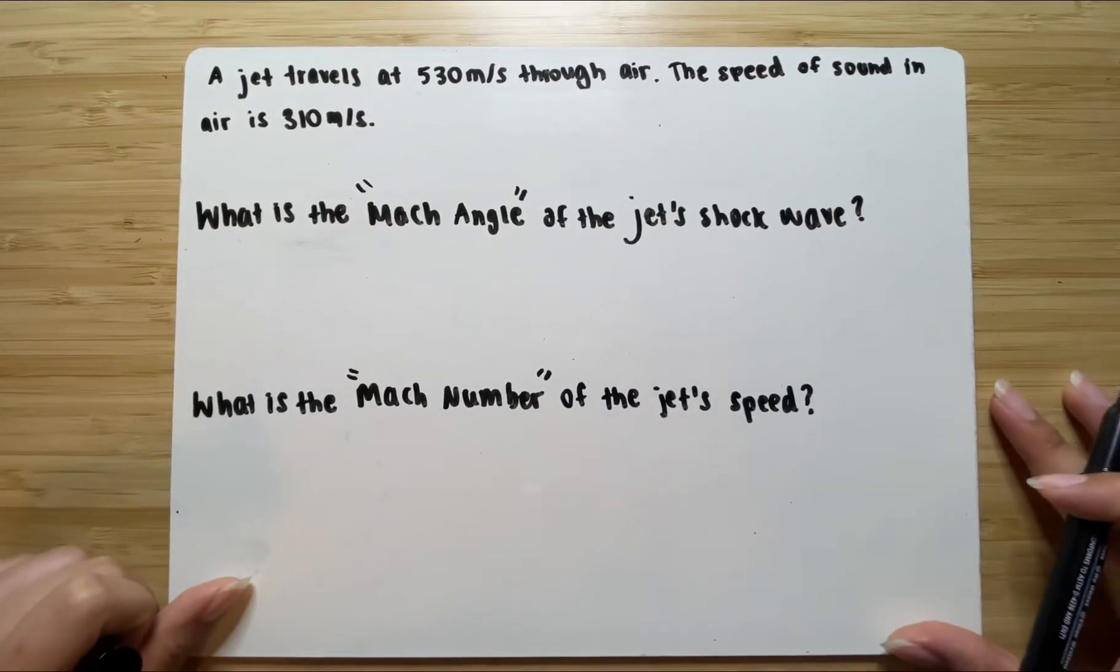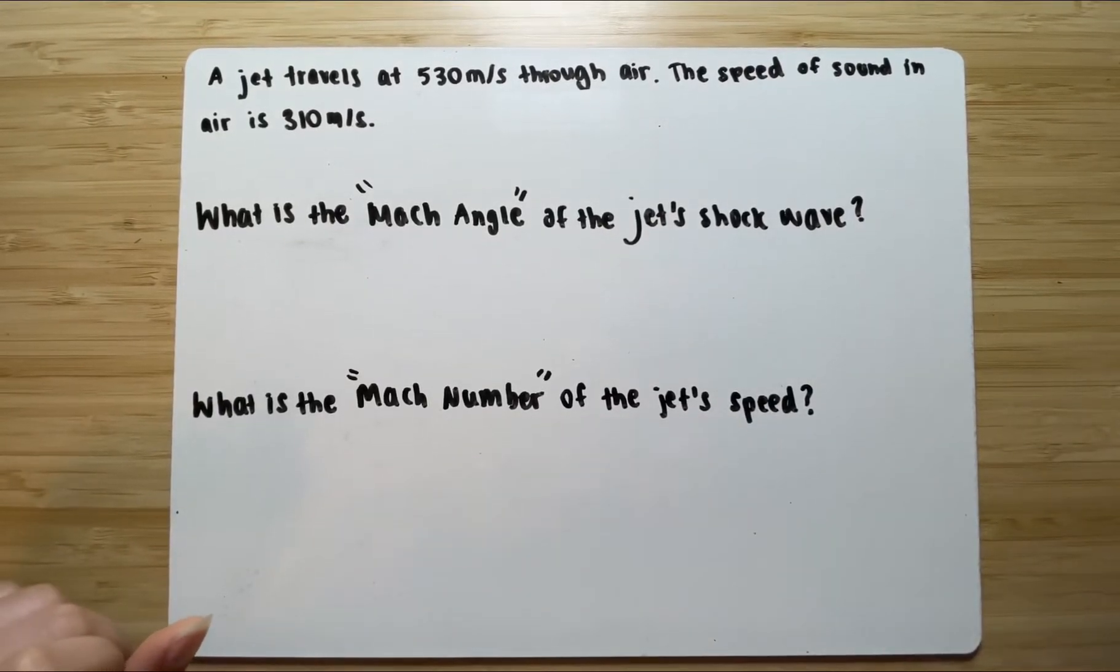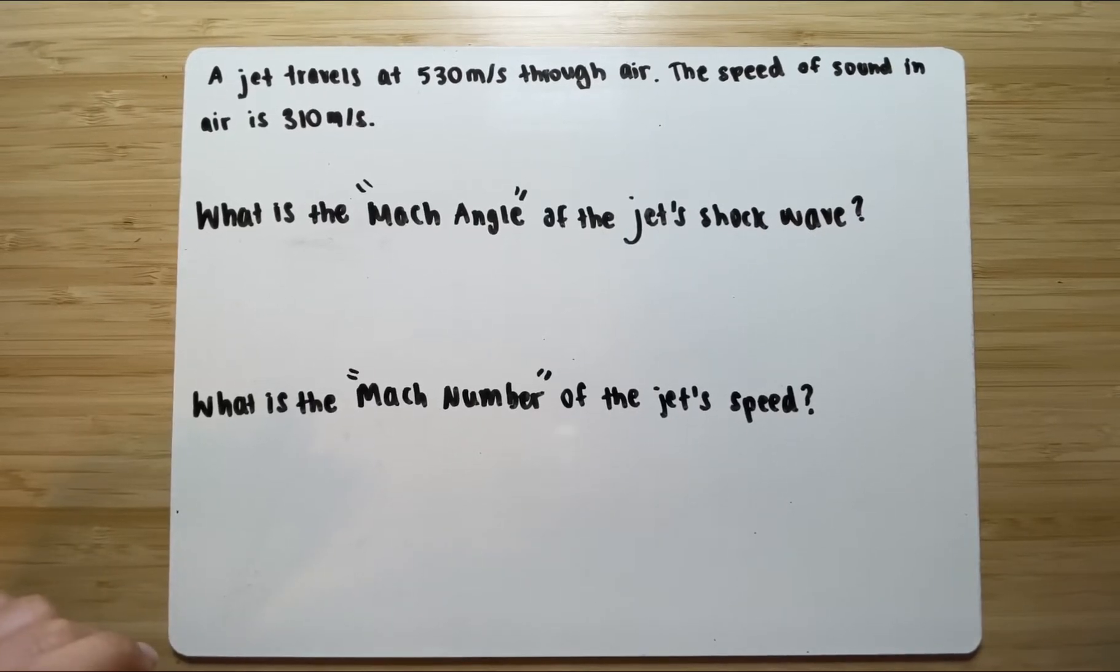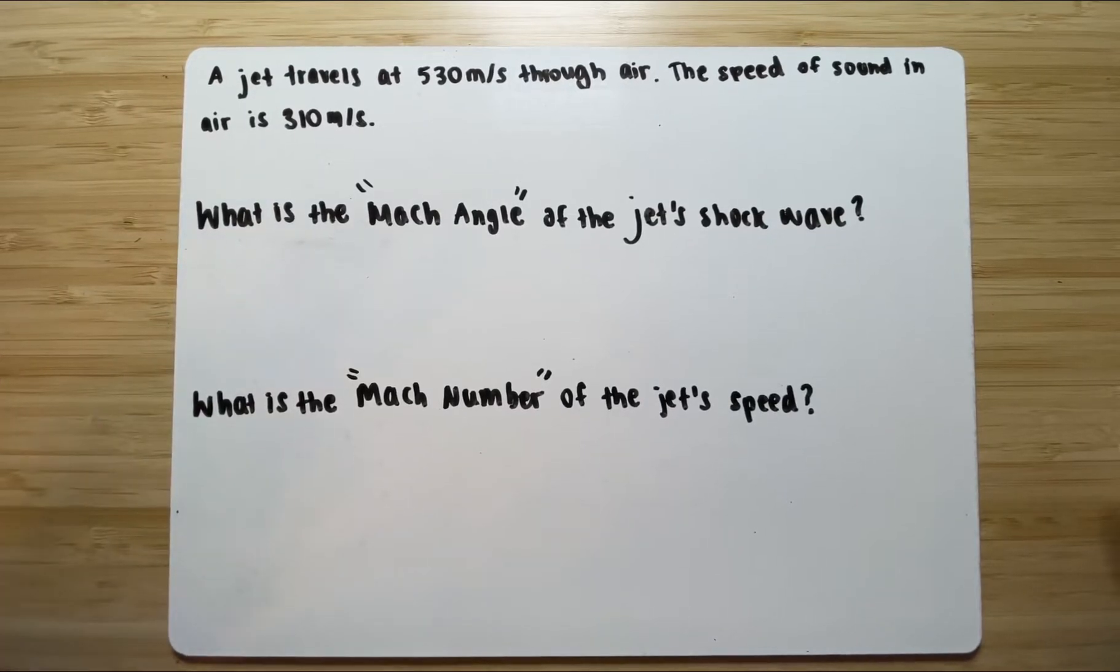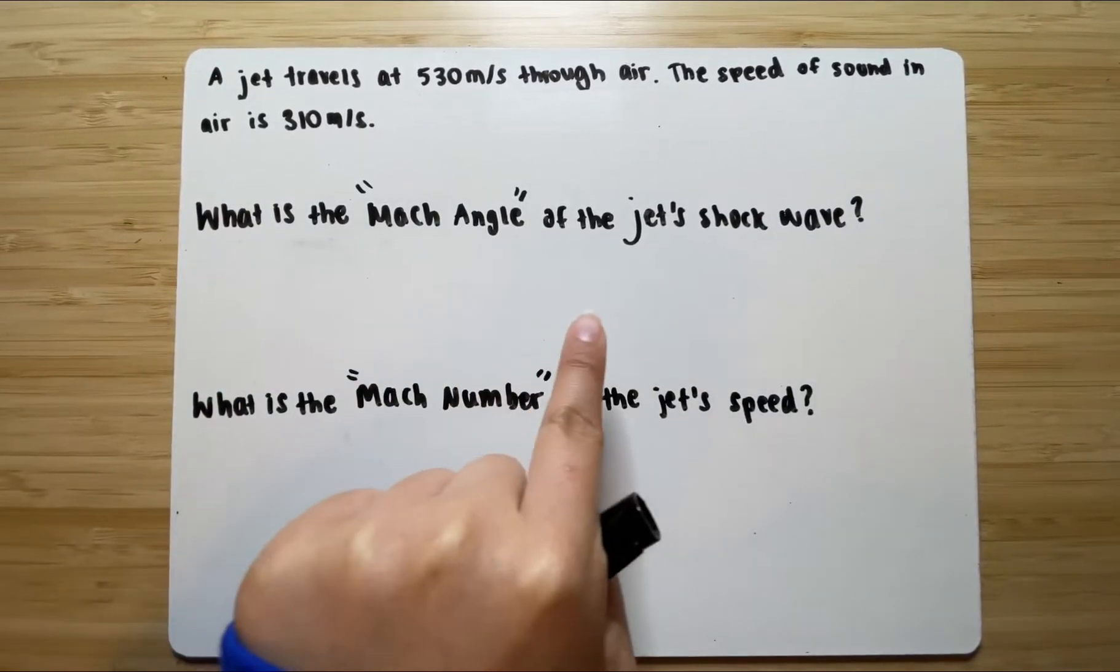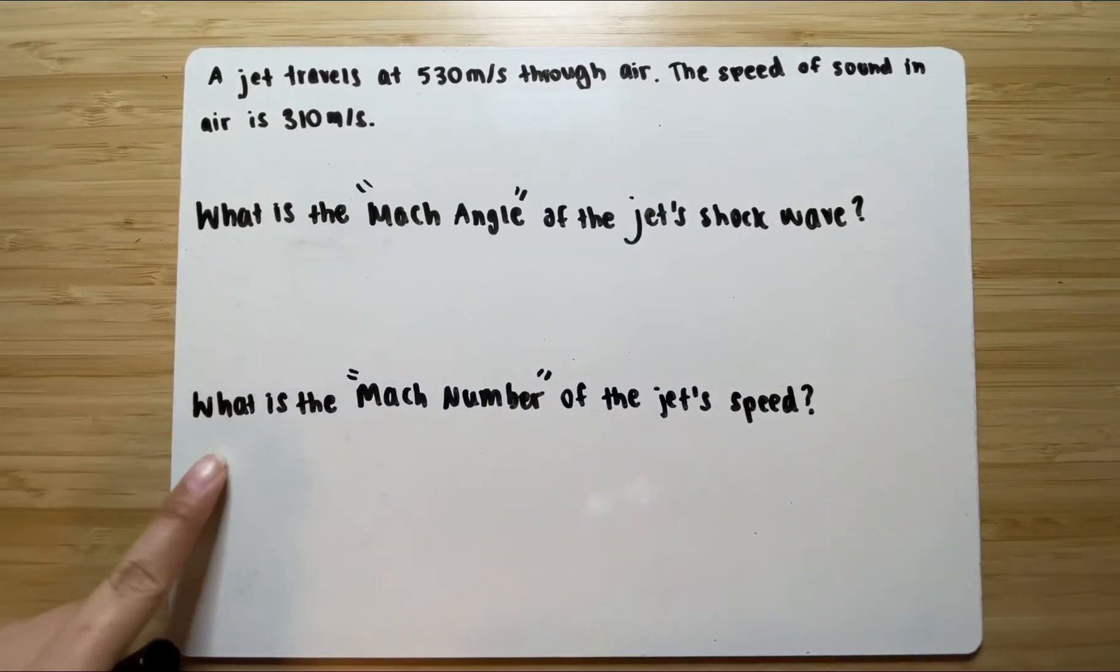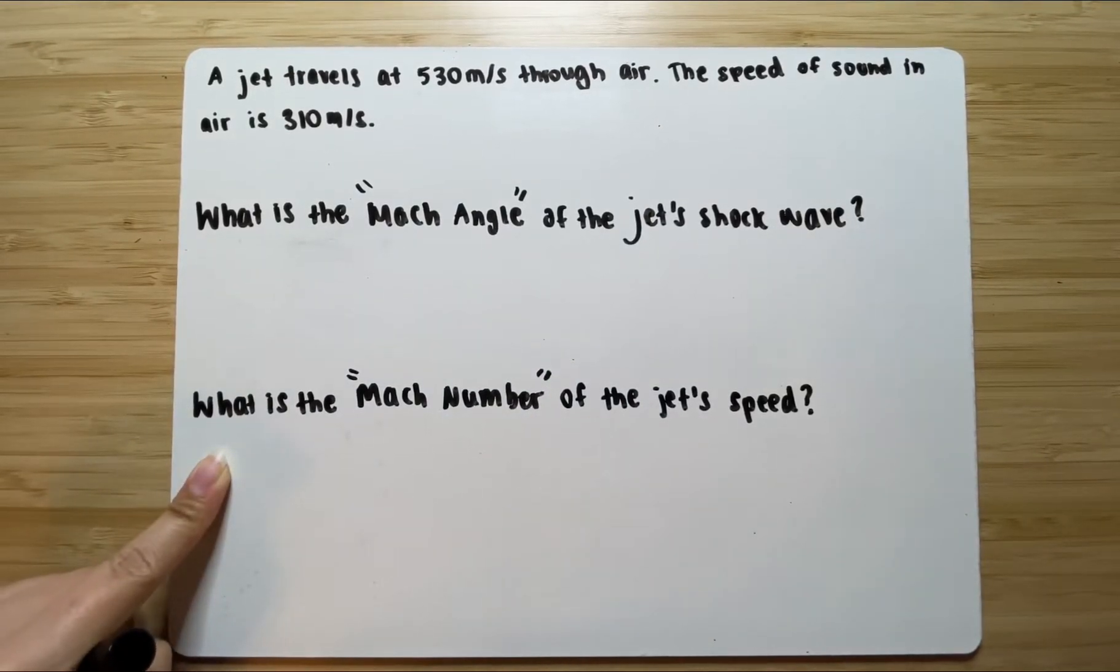A jet travels at 530 meters per second through air. The speed of sound in air is 310 meters per second. This problem is asking two things. It wants to know what is the Mach angle of the jet's shockwave, and it wants to know what is the Mach number of the jet's speed.